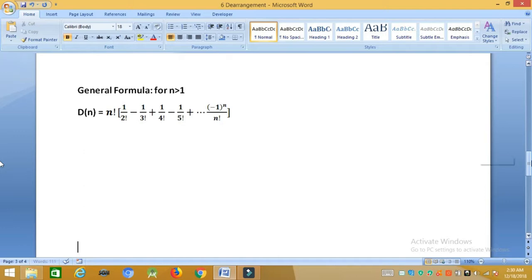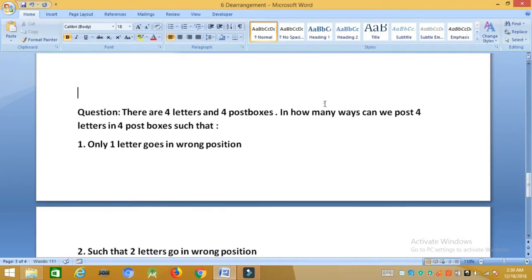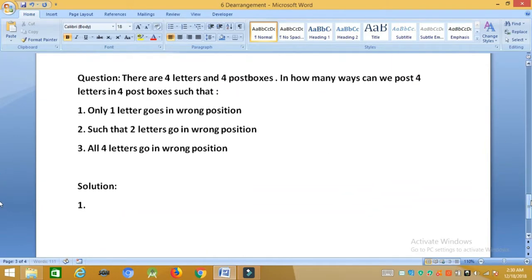Now let us consider a question for further elaboration. There are 4 letters and 4 postboxes. In how many ways can we post 4 letters in 4 postboxes such that, let us see the first part, only 1 letter goes in wrong position. So it is actually asking if only 1 letter goes in wrong position. Now you yourself consider there are 4 postboxes and 4 letters. How is it possible that only 1 letter can go in the wrong postbox? If 3 letters have already gone into the right postboxes, then I am left with only 1 postbox. Then that letter must go into the right postbox only. There is no way that only 1 letter goes in wrong position. By this concept, I have to dearrange only 1 letter. So that is d1 equals 0. That is the answer.